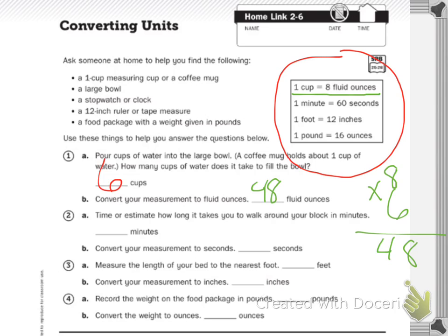Time or estimate how long it takes you to walk around your block in minutes. You might take a walk or estimate. Now convert your measurement to seconds. One minute equals 60 seconds, so you're going to take whatever number of minutes it took and multiply it by 60 to get your seconds.